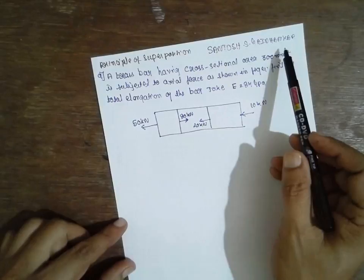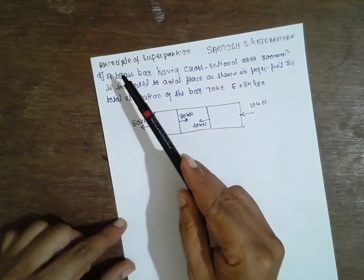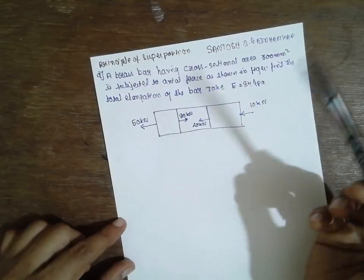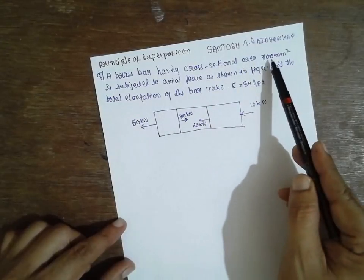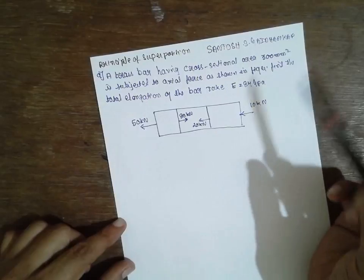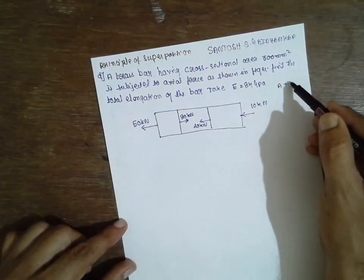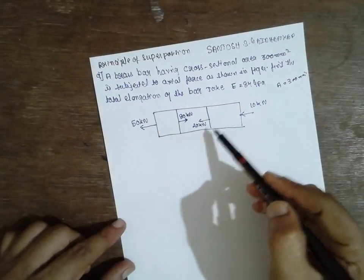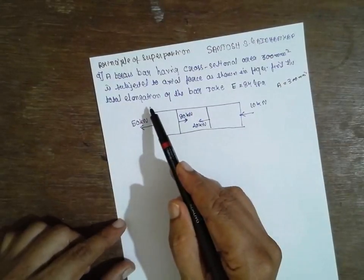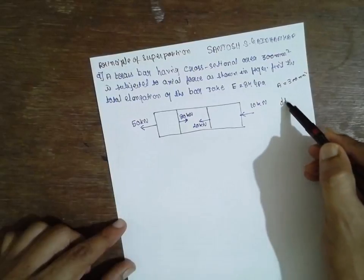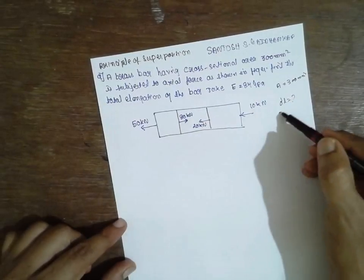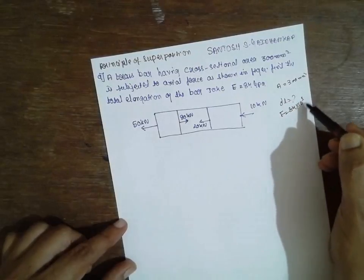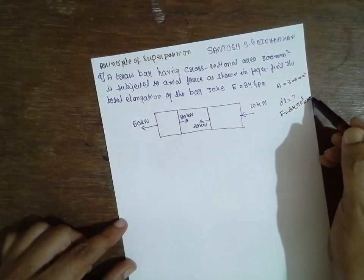I am Santosh Gaidankar. Today I am explaining the principle of superposition over this problem. A bar having a cross-sectional area of 300 mm² is given here, subjected to an axial force as shown in the figure. We have to find the total elongation, delta L, where E is 84 × 10³ N/mm².